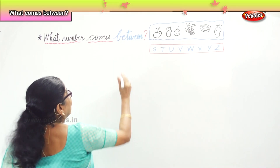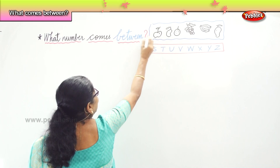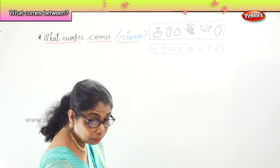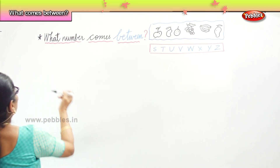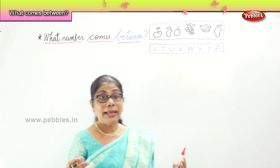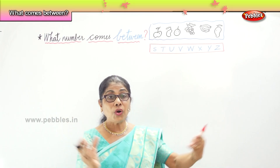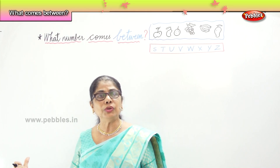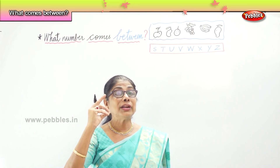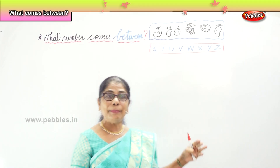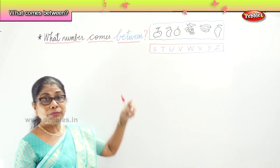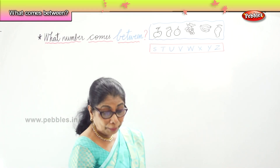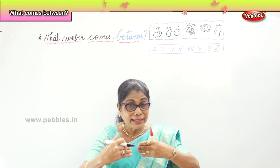So we are learning what number comes between. We learned fruits, we learned letters. But now I am going to ask you what number comes between. Having learned the numerals 1 to 100, forward writing counting and backward counting writing, I am going to give you a small exercise to recollect and remember what number comes between. I am going to give you two numbers — you find the between number.